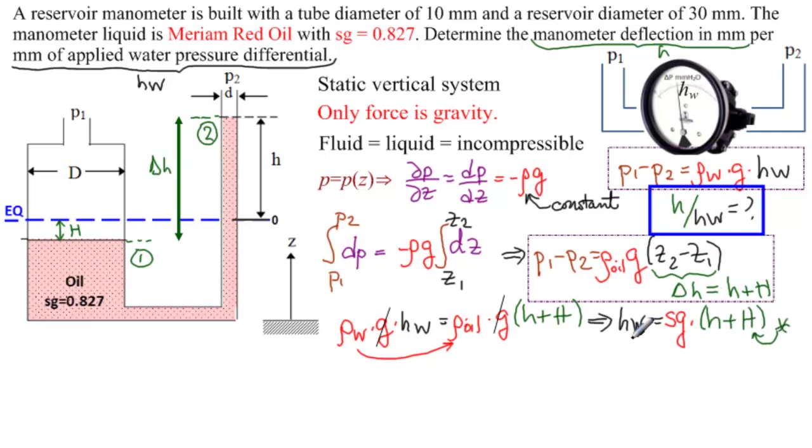So the question is, is big H a function of little h and other things we know here? And the answer is yes. Why? Because the volume of the oil has remained unchanged. So this volume that's displaced here must equal the volume that's created here. So volumes are the same.